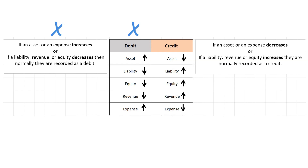On the credit side, if an asset or an expense decreases, or if a liability, revenue, or equity increases, they are normally recorded as a credit.